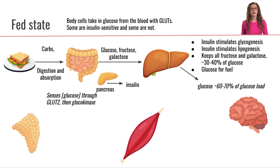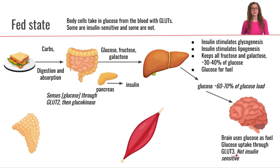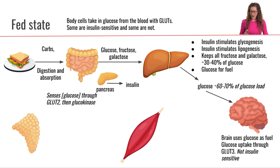From there, glucose is going to be traveling around the bloodstream. The brain is going to be using glucose as fuel — glucose enters neuronal cells through GLUT3, which is a glucose transporter that is not insulin sensitive. So whether insulin is present or not, neurons are able to take in glucose, which is a good thing.